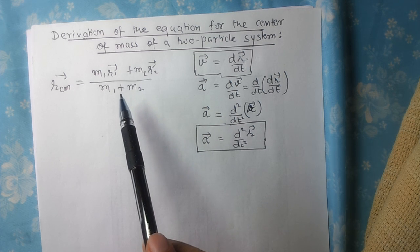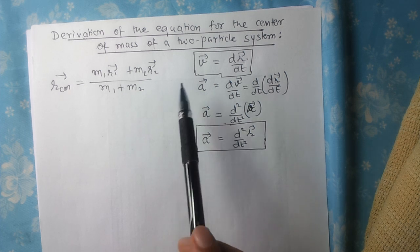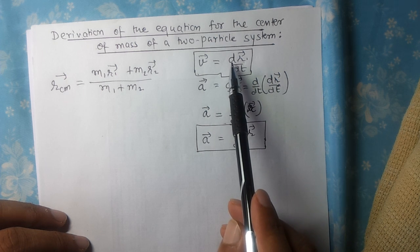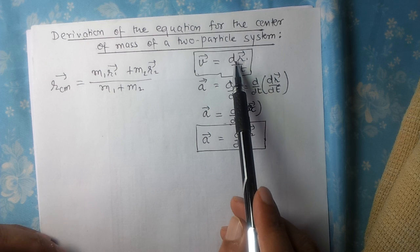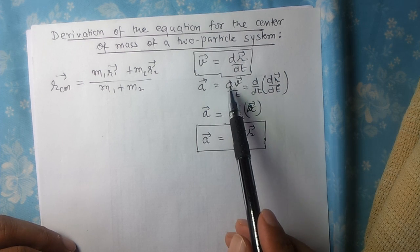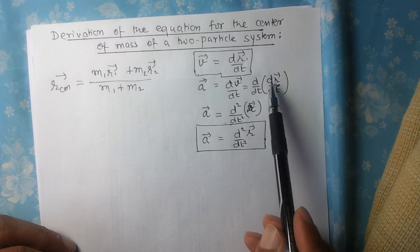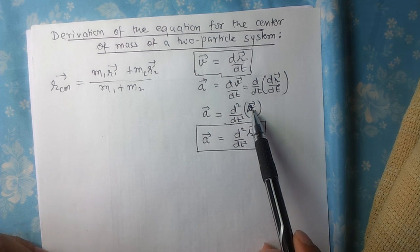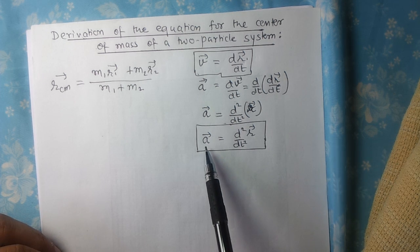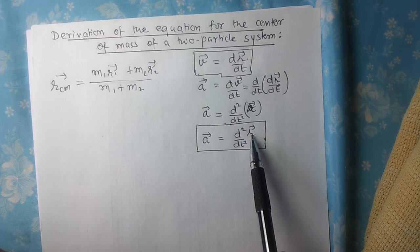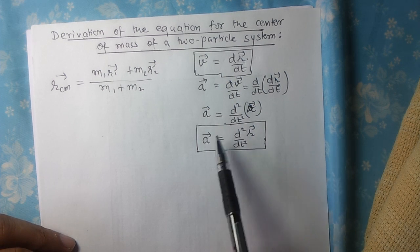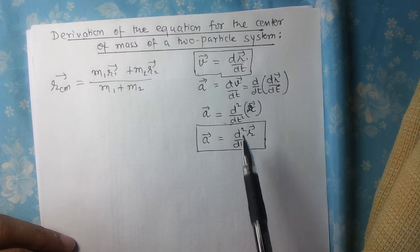Before we get into the derivation, let us go through some basics of vectors. We know that the velocity vector equals displacement — this is our position vector. So dR by dt gives you velocity, and acceleration is dV by dt. And if we substitute V equals dR by dt, we get acceleration equals d²R by dt² — the double differentiation of the position vector. We will be using this during the course of this derivation.